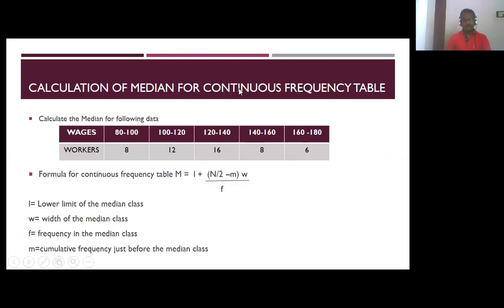Calculation of median for a continuous frequency table. Calculate the median for the following data: wages 80 to 100 for 8 workers, 100 to 120 for 12 workers, 120 to 140 for 16 workers, 140 to 160 for 8 workers, 160 to 180 for 6 workers. The formula for the continuous frequency table is: Median = L + ((n/2 - m) / f) × w, where L is the lower limit of the median class, w is the class width, f is the frequency of the median class, and m is the cumulative frequency just before the median class.